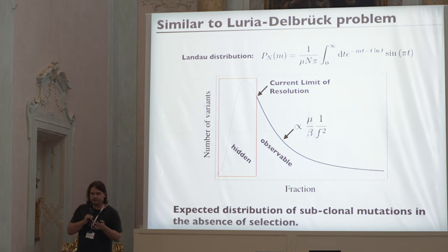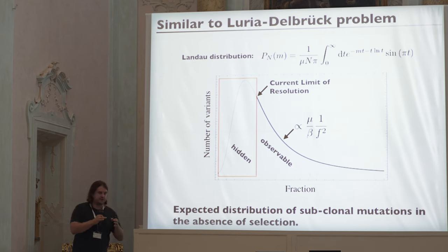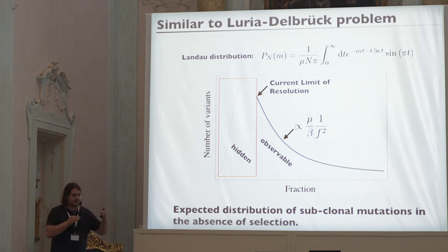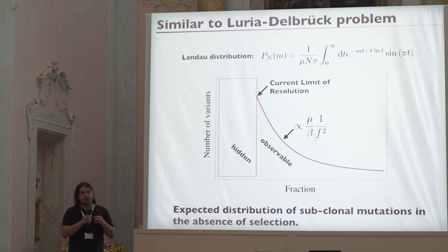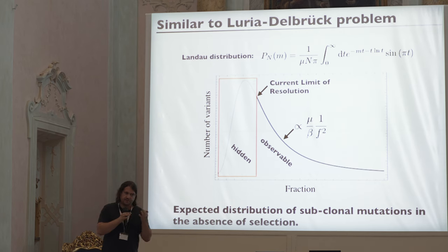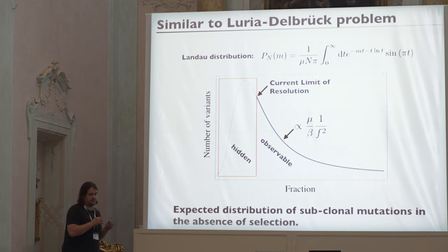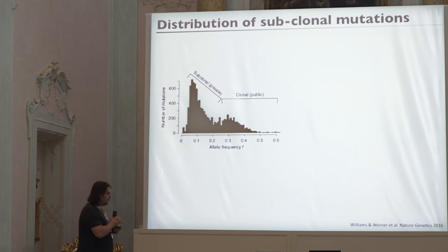This solution assumes we only have passenger mutations. So given this hypothesis, how does the data look? A typical example — a gastric cancer sequenced to high depth — shows clonal mutations and then an increase of mutations toward lower frequencies, as the theory predicts from this branching process of mutation accumulation. The slope should be proportional to 1/f² in the probability distribution, or 1/f in the cumulative distribution.